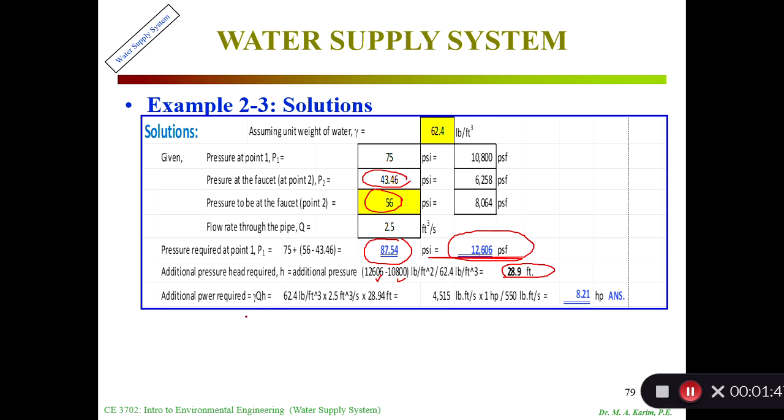From the head, if I know the power equation, power equals gamma Q H, or equal to P Q, we can find the pressure from here. If we multiply with Q, we can get it. Gamma is 62.4, Q is 2.5, and H is 28.9. We get 4515 pound-feet per second, and 550 pound-feet per second equals 1 horsepower, so I get 8.21 horsepower.